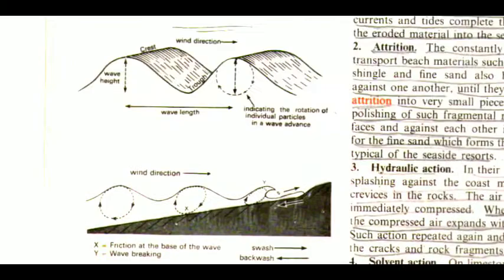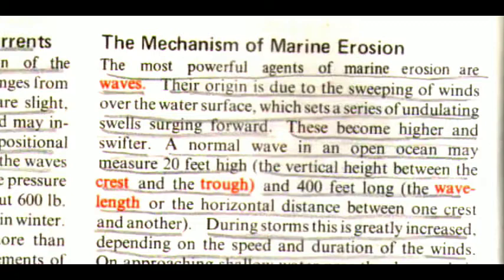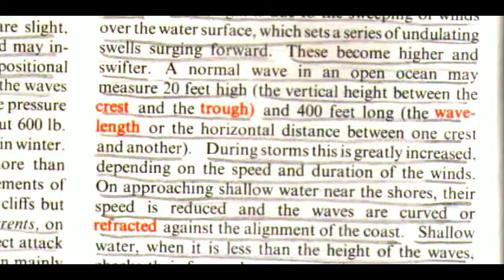Now the mechanism of marine erosion. The most powerful agents of marine erosion are waves. Their origin is due to the sweeping of winds over the water surface, which sets a series of undulating swells surging forward. Tides become higher and swifter. A normal wave in an open ocean may measure 20 feet high — the vertical height between the crest and trough — and 400 feet long, the wavelength or the horizontal distance between one crest and another.